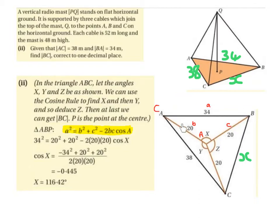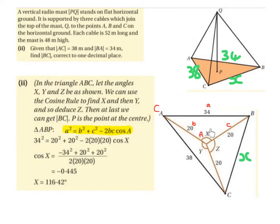So we're going to take the triangle A, B, P and label its sides A, B, and C to substitute into the cosine rule. Remember, triangle ABP is not a right-angled triangle — it's a non-right-angled triangle, so we're not going to use Pythagoras' theorem and there's no hypotenuse. The cosine rule is: A squared equals B squared plus C squared minus 2BC cos A. The capital letter in the formula is A, which means the angle we're using must be labelled angle A. The side opposite that angle must be lowercase a.